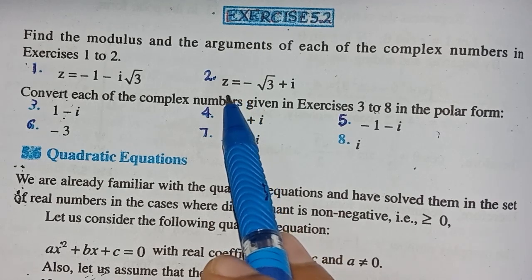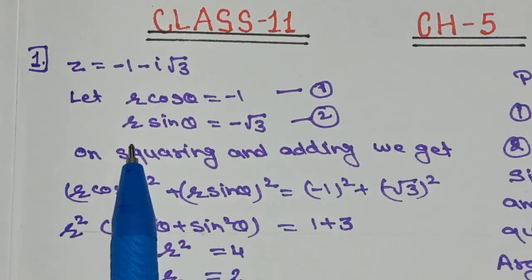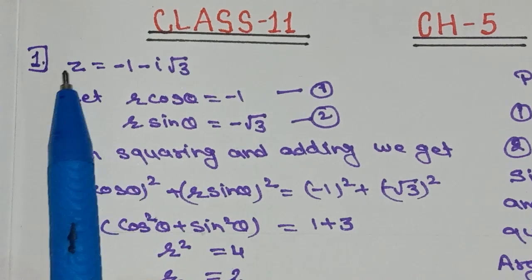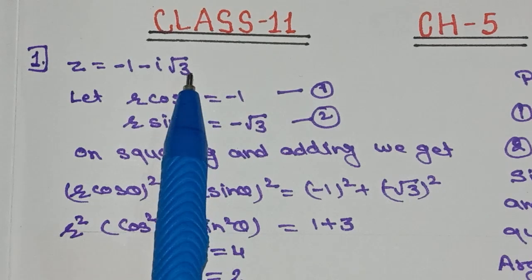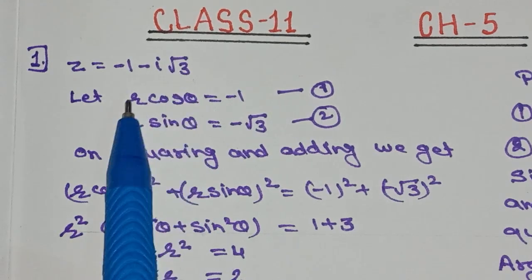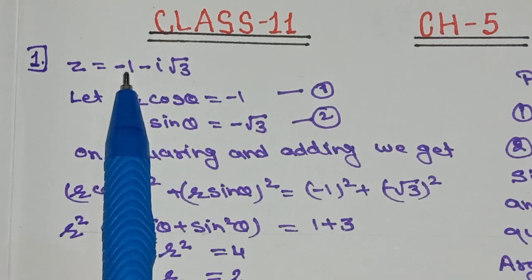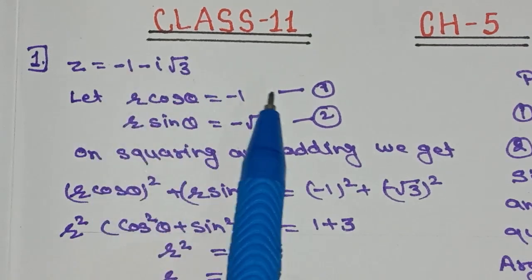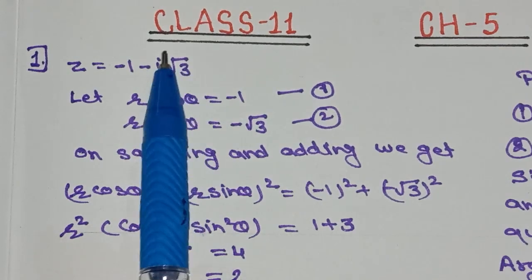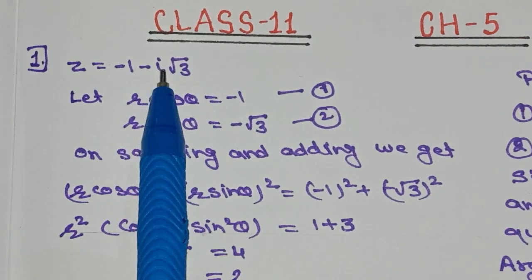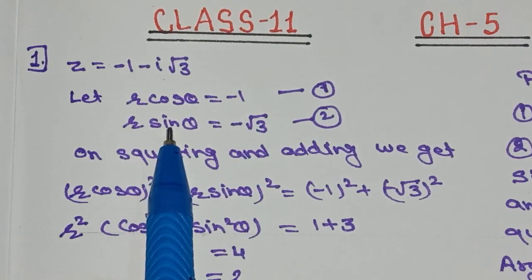After finding the modulus, we also need to find the argument. Let's see the first question of the exercise. The given complex number is z = minus 1 minus i√3. First, the real part is minus 1, so we put r cos θ equal to minus 1. The imaginary part — the part with i — is minus √3, so we put r sin θ equal to minus √3.